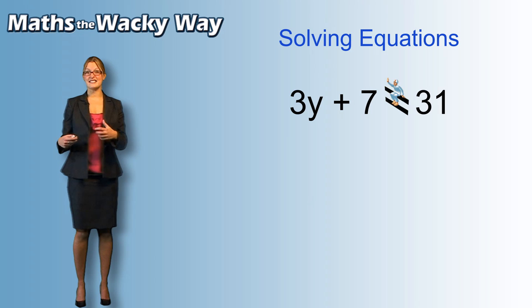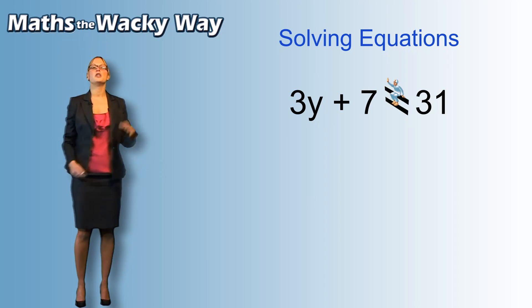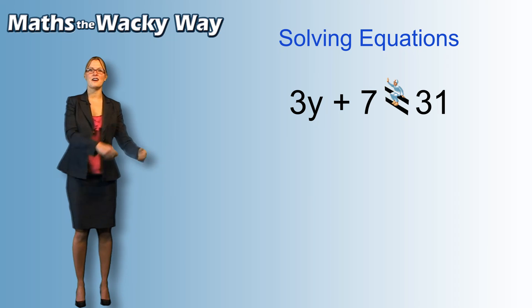So if you were adding, you go to the other side, you get high fived, you become subtract. If you were multiplying, you go to the other side, high five, you become a division.